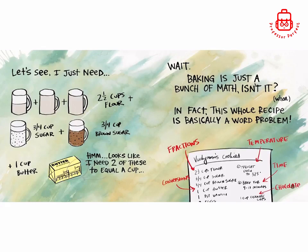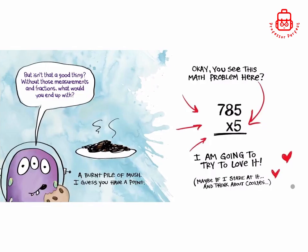Hmm, looks like I need two of these to equal a cup. Wait, baking is just a bunch of math, isn't it? Whoa! In fact, this whole recipe is basically a word problem. It has fractions, temperature conversions, time, chocolate. But isn't that a good thing? Without those measurements and fractions, what would you end up with? A burnt pile of mush.